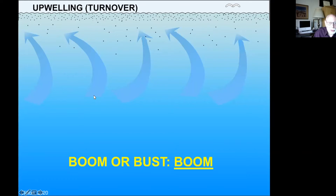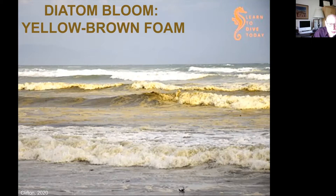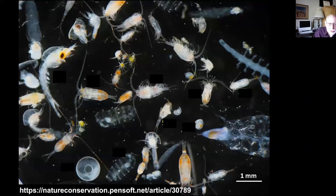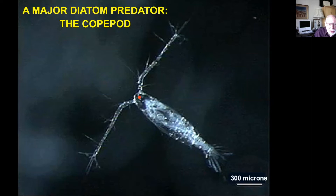You can spot diatom blooms in the bay because the waves churn up a yellow foam that forms yellowish slicks on the beaches. Diatom blooms in Antarctica are huge and attract a myriad of predators. Chief among these are the copepods — little one-eyed crustaceans — and a single one could consume an estimated 350,000 diatoms in a day.